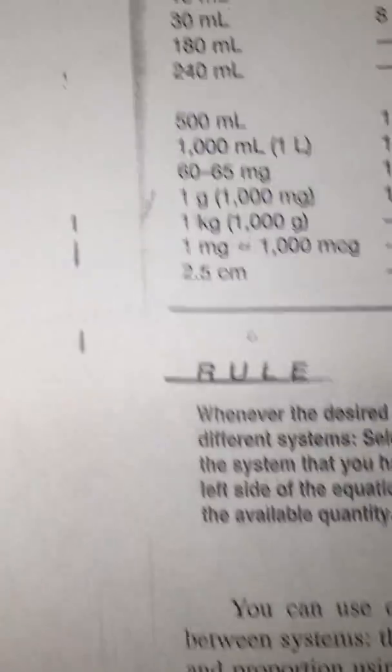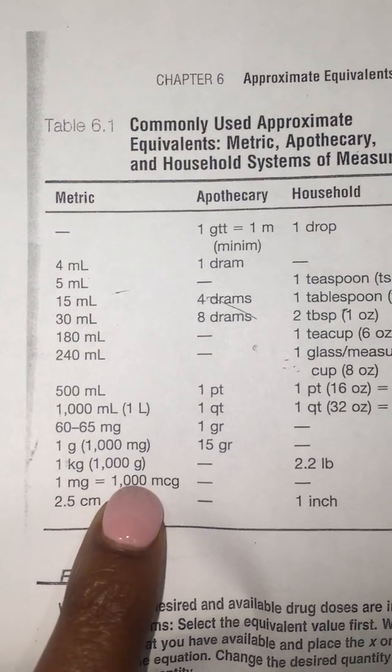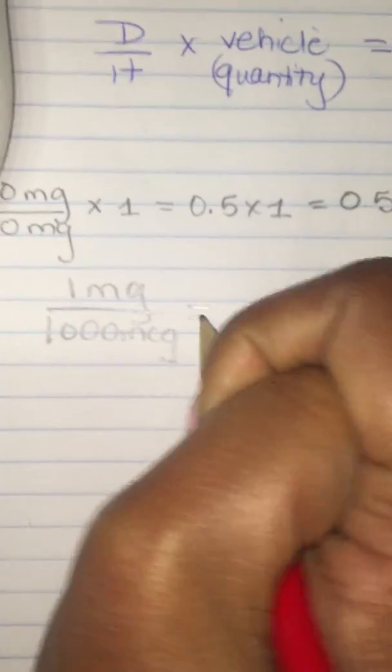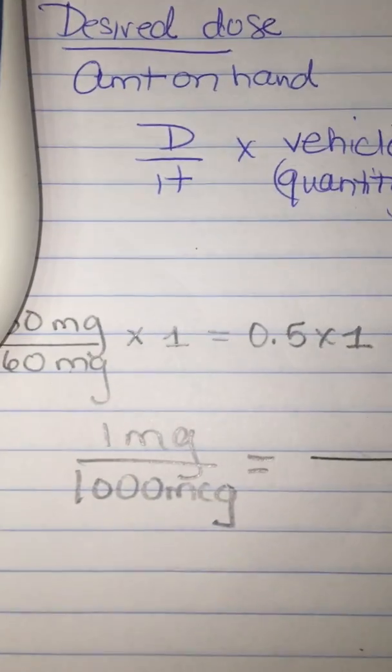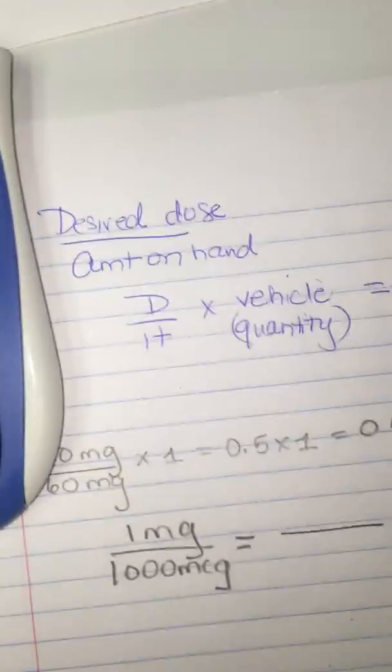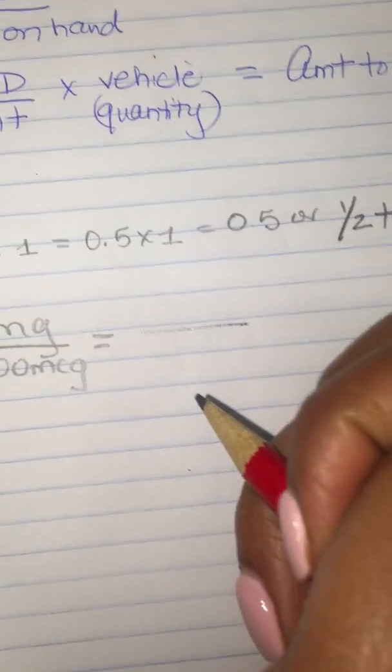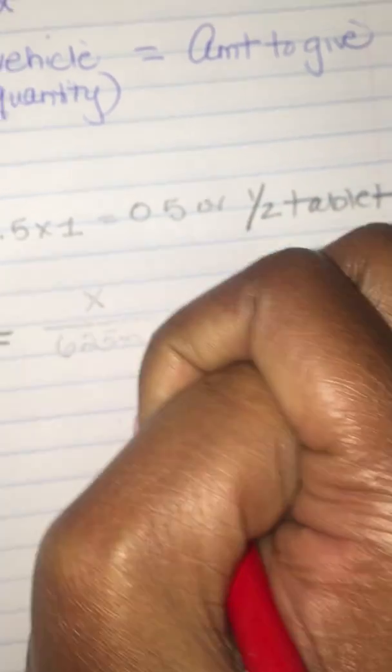So one milligram equals 1,000 micrograms. Okay, so we're going to go back up here and see exactly what they have given us to work with. Let's start with trying to fill out what the milligrams are. They gave me 625 micrograms to work with, so I want to cross multiply here.